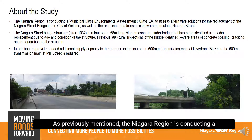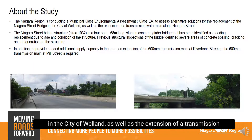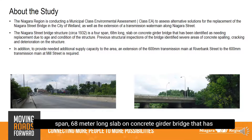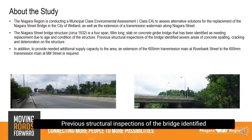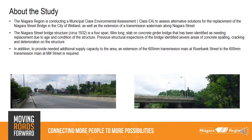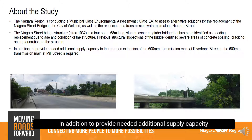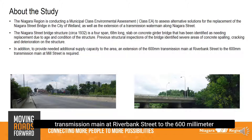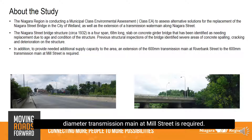The Niagara Region is conducting a Municipal Class Environmental Assessment to assess alternative solutions for the replacement of the Niagara Street Bridge in the City of Welland, as well as the extension of a transmission water main along Niagara Street. The Niagara Street Bridge structure, built in 1932, is a four-span, 68-meter-long slab-on-concrete-girder bridge that has been identified as needing replacement due to age and condition. Previous structural inspections identified severe areas of concrete spalling, cracking, and deterioration. In addition, to provide needed additional supply capacity to the area, an extension of the 600-millimeter diameter transmission main at Riverbank Street to the 600-millimeter diameter transmission main at Mill Street is required.